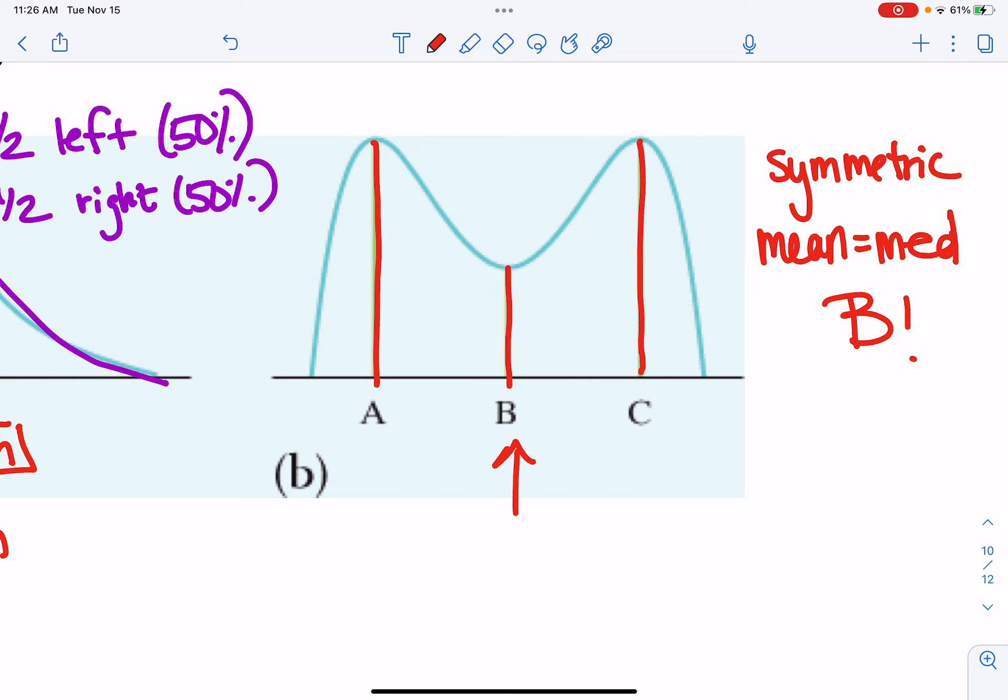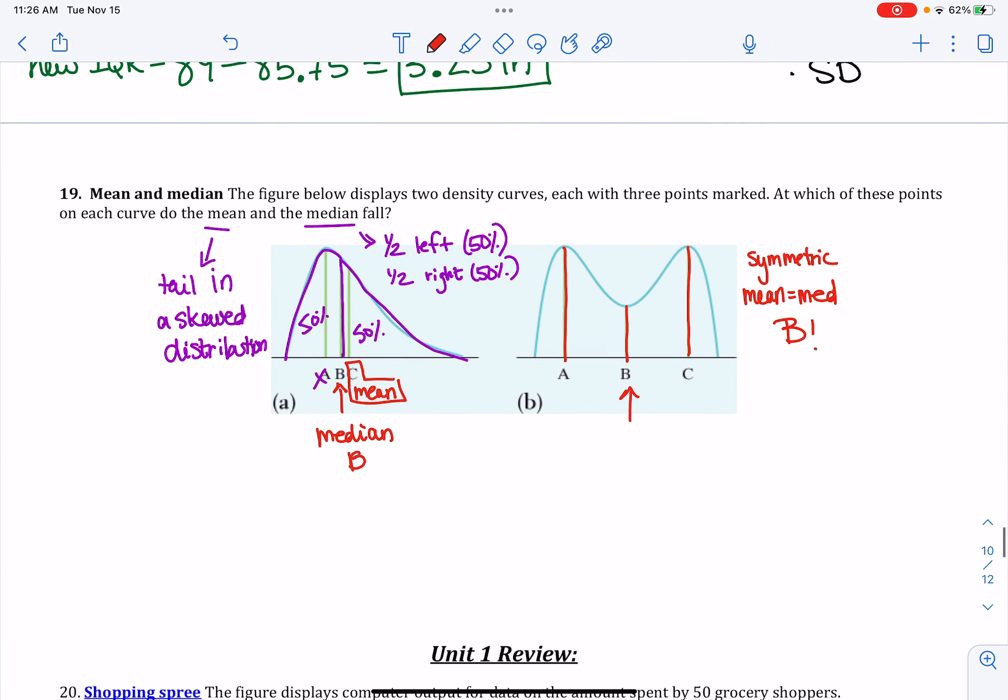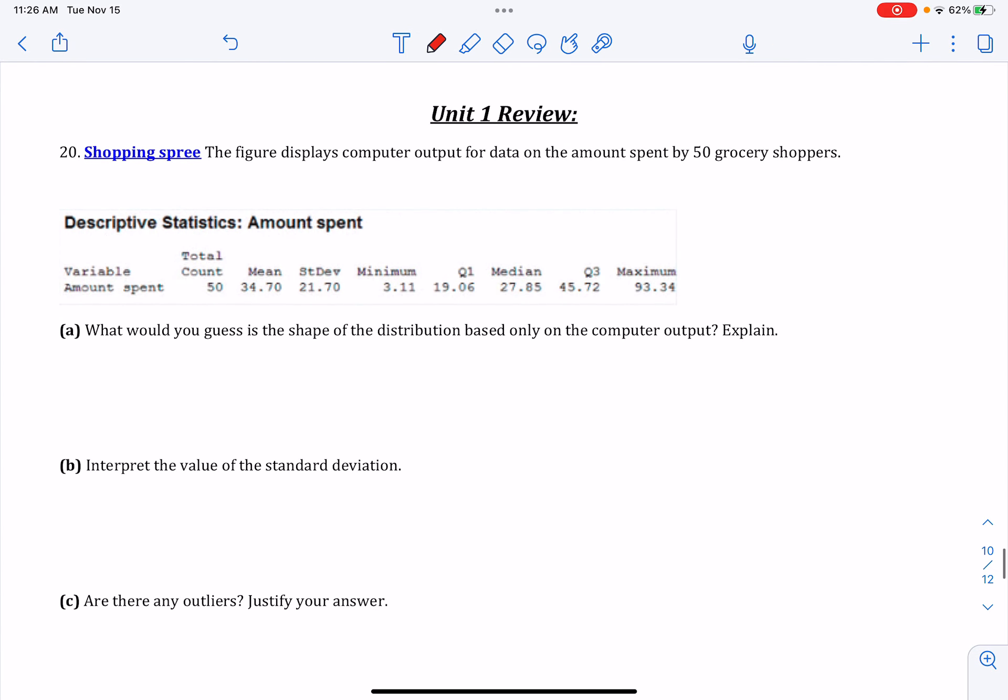So in number 20, we are going to look at a set of summary statistics. So the figure below displays the computer output for data spent by 50 grocery shoppers. And I want to know where they're grocery shopping because I've never spent this little at the grocery store. So it looks like the total count was 50. Remember that another way to denote that is N is 50 customers.